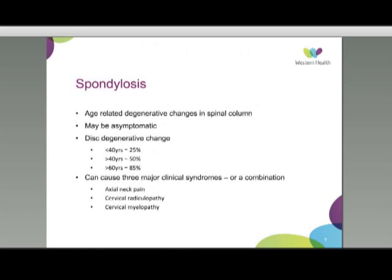Spondylosis describes age-related degenerative change in the spinal column, and it may be asymptomatic. Simply seeing something on imaging does not necessarily correlate with a clinical finding. Studies looking at MRIs across age populations have shown that under 40 years of age around 25% have some degree of degeneration, rising to around 85% in those above 60 years — and this doesn't correlate with the rates of symptomatic patients.